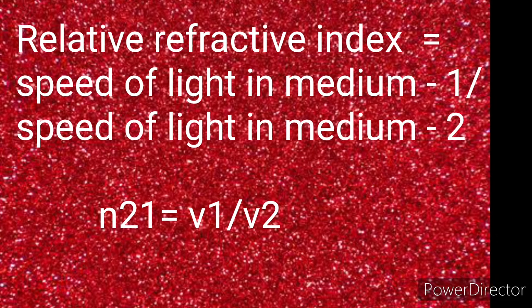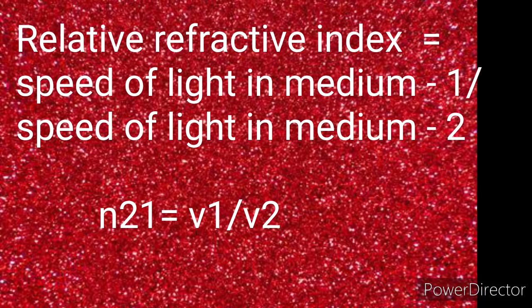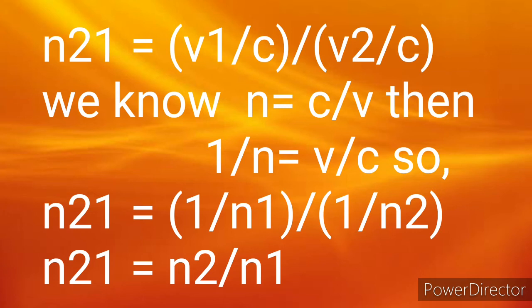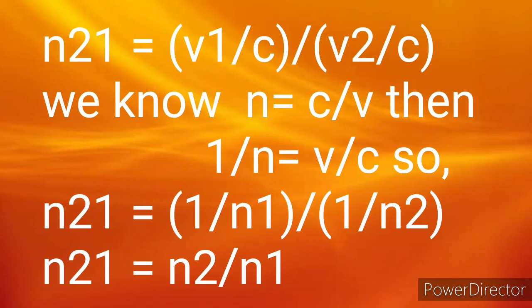Let v₁ and v₂ be the speeds of light in the first and second medium respectively. The refractive index of the second medium with respect to the first medium is v₁/v₂. Dividing both numerator and denominator by c, we get n₂₁ = (v₁/c) / (v₂/c). We know the absolute refractive index n = c/v, so 1/n = v/c. Substituting the value of v/c into the equation, we get n₂₁ = (1/n₁) / (1/n₂).